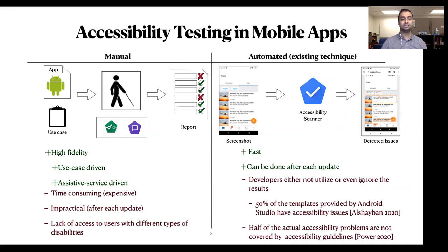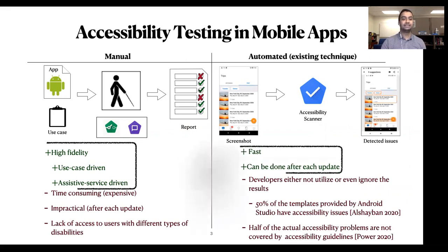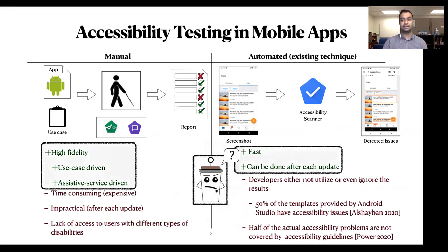Another study showed that more than 50% of actual accessibility problems could not be detected by accessibility guidelines. The question is: is it possible to have a testing technique that could benefit from both sides? We believe our approach, Lotte, can be the first step toward this ideal case.